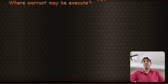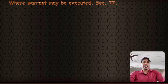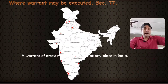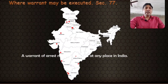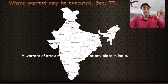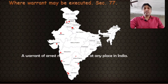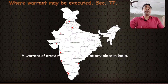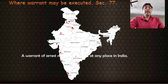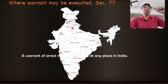Now Section 77 contains the provision 'Where warrant may be executed.' There is no limitation — a warrant of arrest may be executed at any place in India. It is not the case that a warrant can only be executed within the jurisdiction of the court that issued it. Section 77 clarifies that if any court issues a warrant, such warrant may be executed at any place in India.